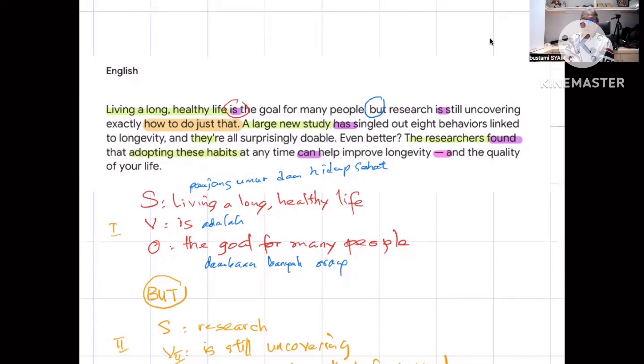We know that in a paragraph there is a topic sentence. We must find that topic sentence, because by knowing the topic sentence, we can predict what will be discussed by the author in the following paragraphs.